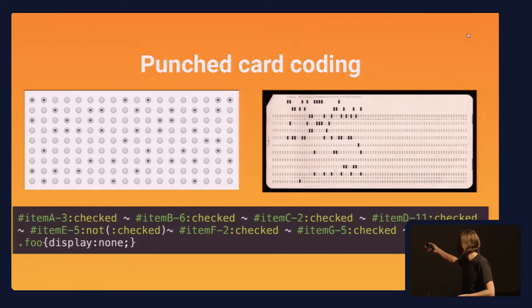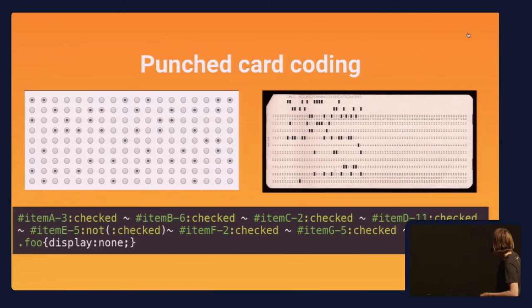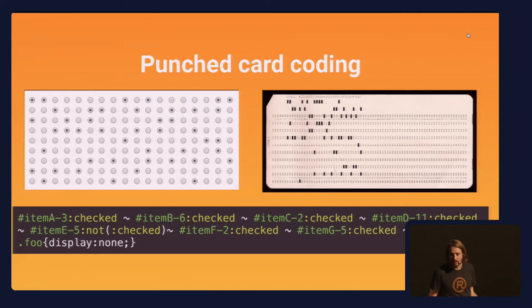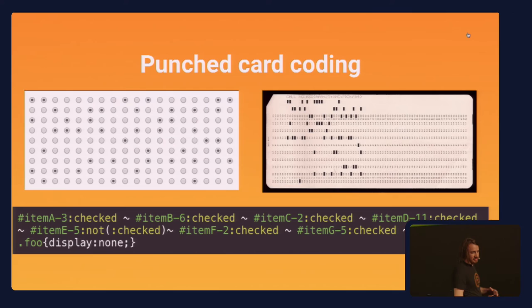So you start stringing selectors together. This CSS snippet: item A3 is checked — that's the sibling of B6 which is checked — that's the sibling of C2 which is checked — which is the sibling of D11 which is checked — which is the sibling of E5 which is not checked. We can use the :not selector too: as long as E5 isn't checked, the statement is still true. Then F2 is checked, G5 is checked, and that's the sibling of a div with class foo, display none. It's an elaborate way of hiding something, but when you see the demos it makes sense — one thing is relevant to another.